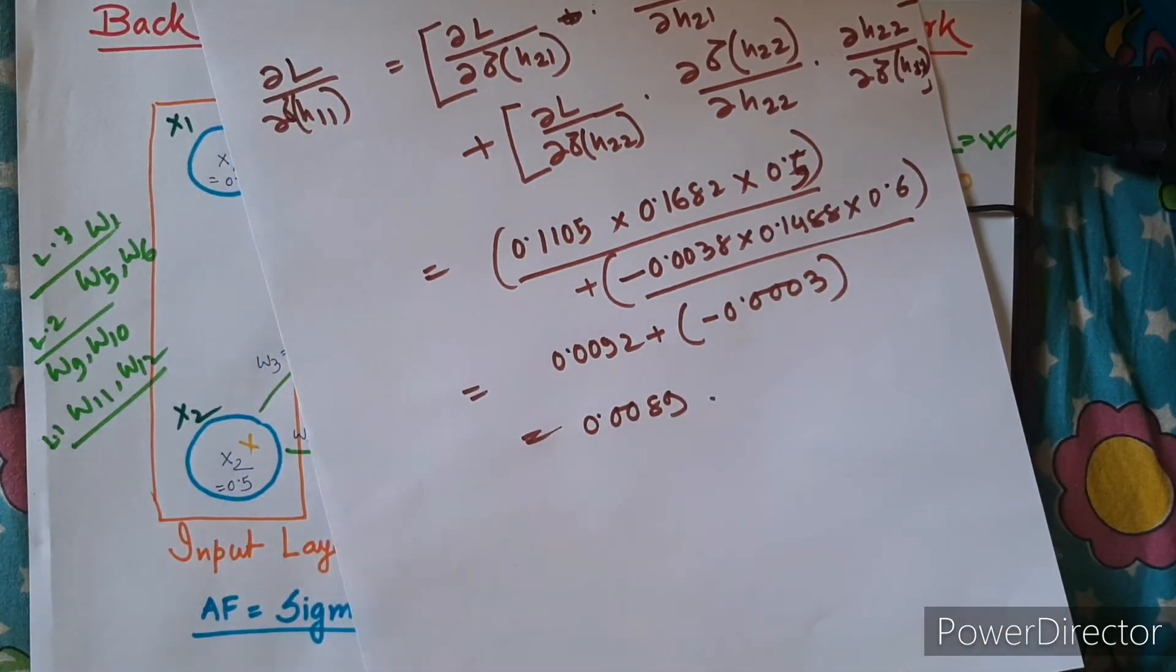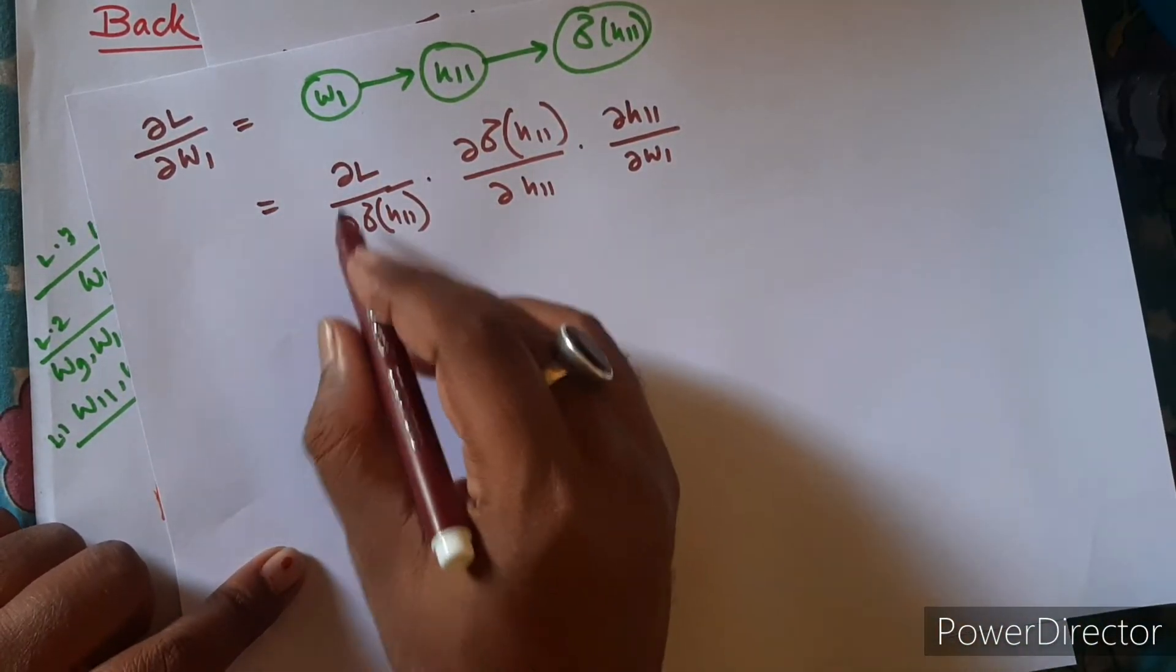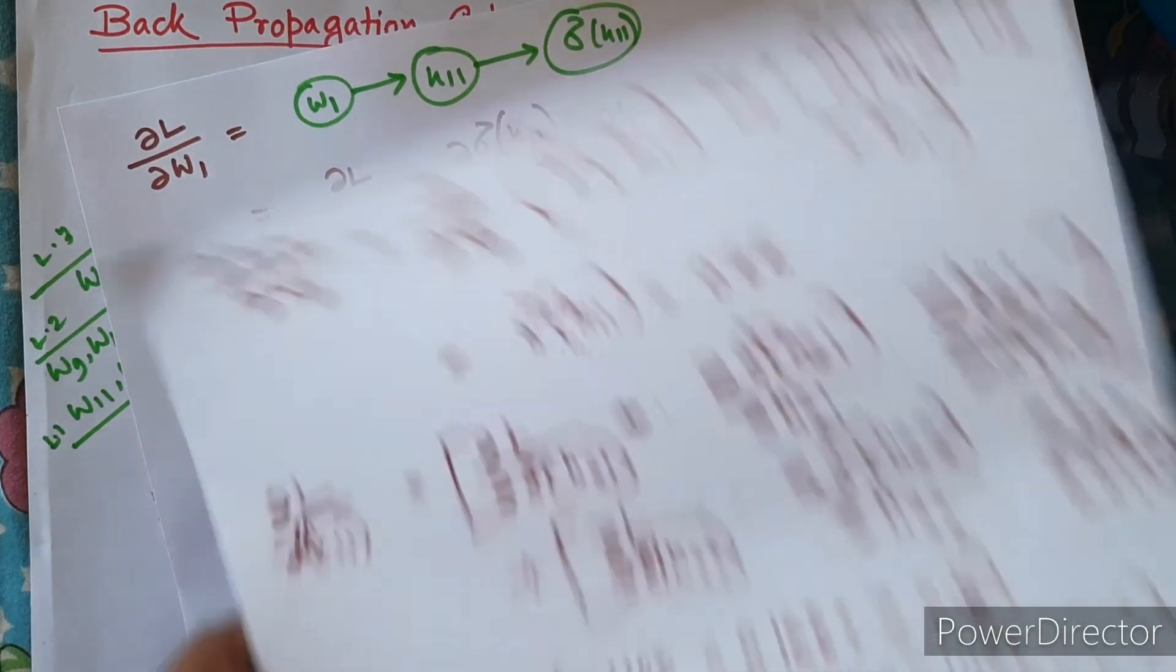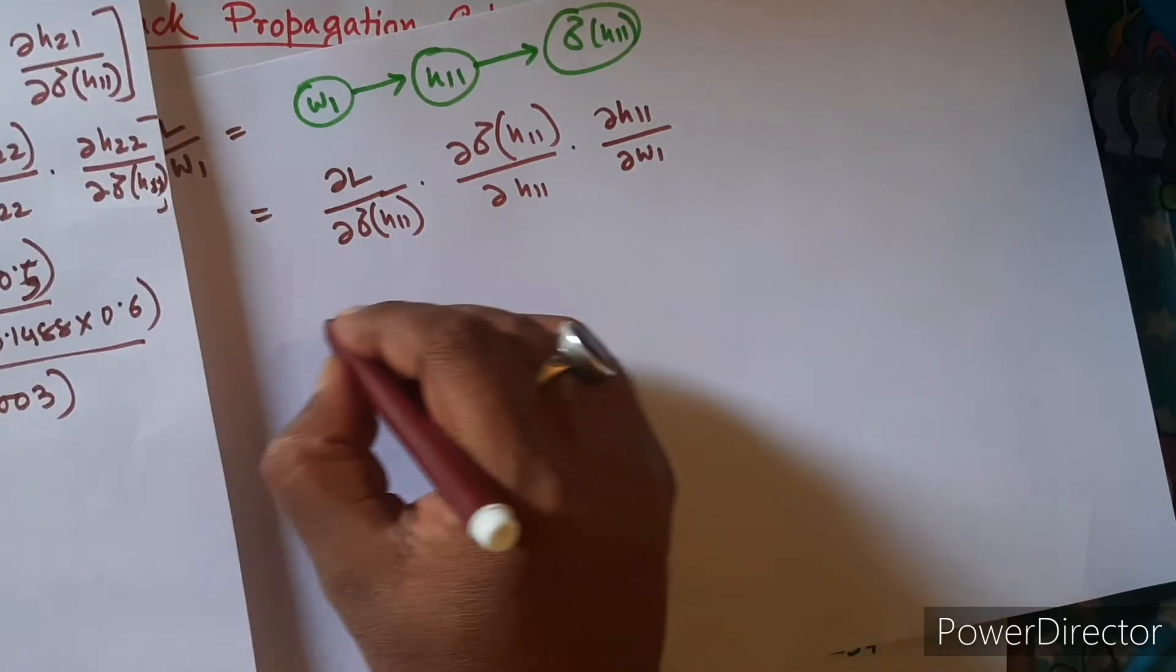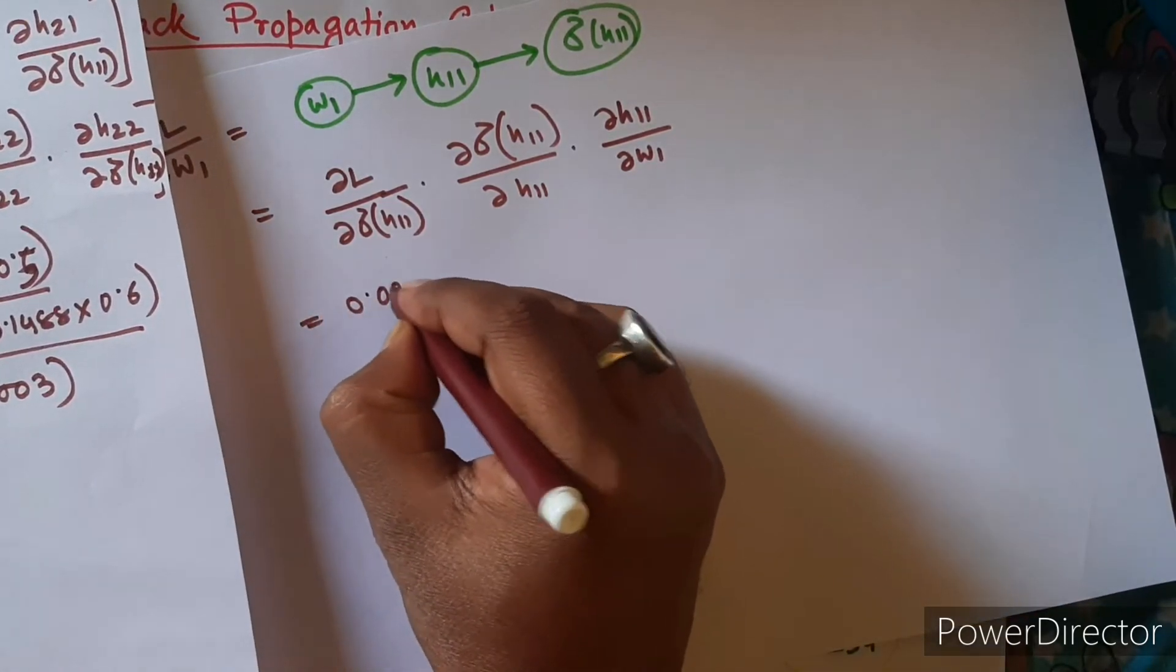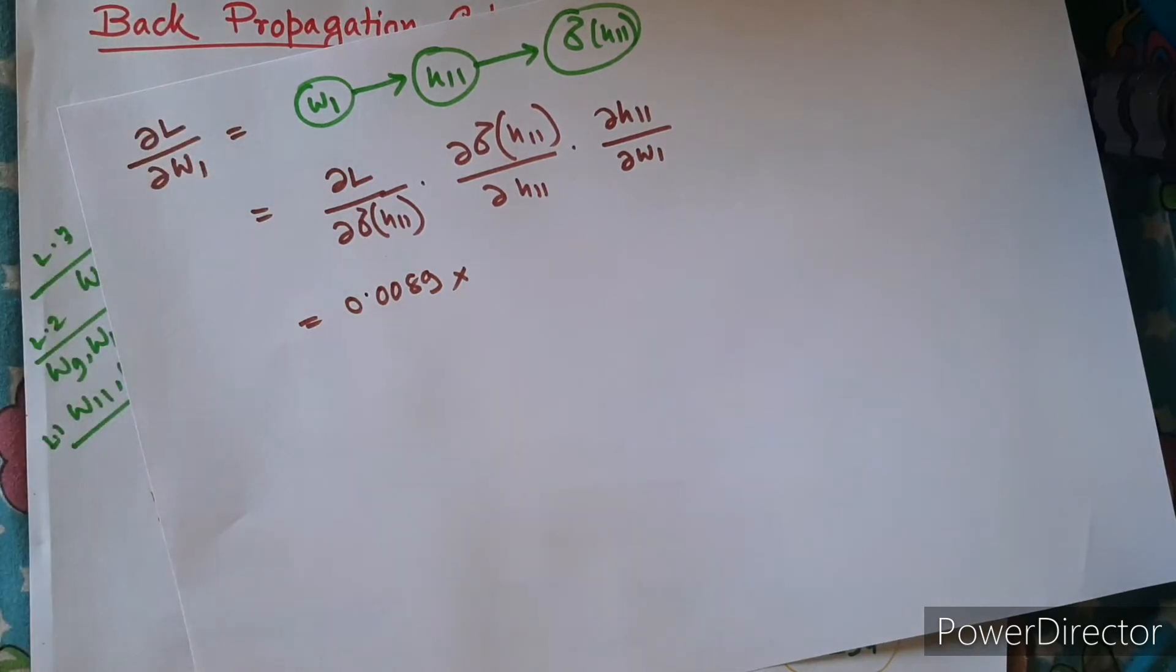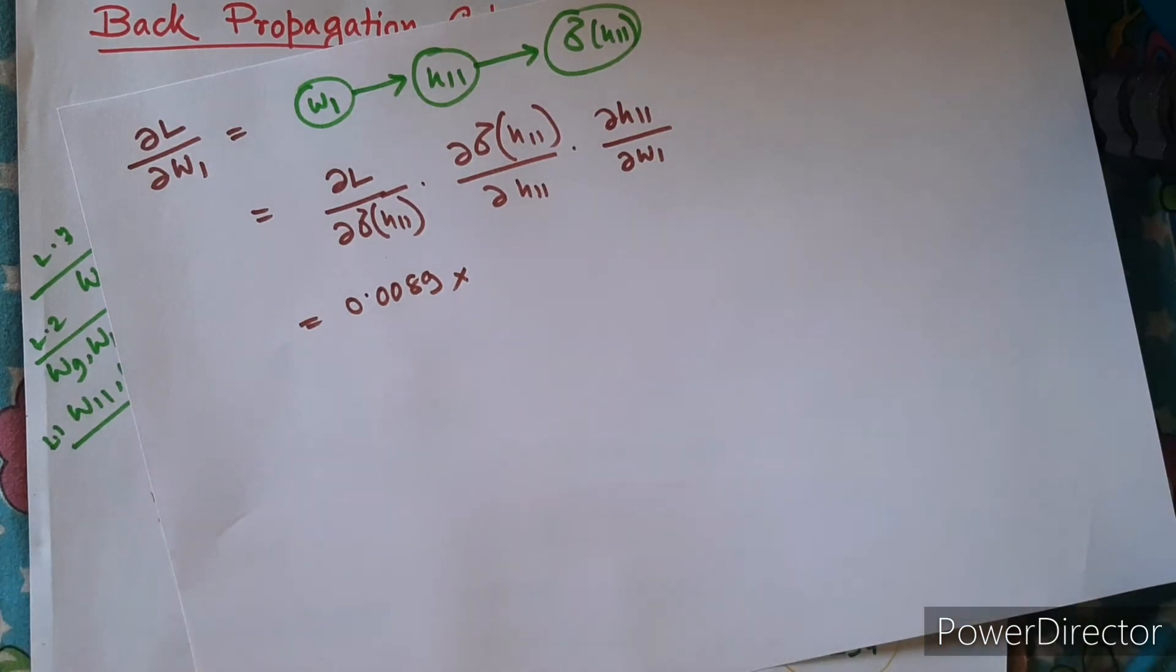So now come back to our original calculation. You know now this portion, right, because you have calculated this. So this is actually 0.0089. What about this portion? It is very easy - sigma of H11 into 1 minus sigma of H11.